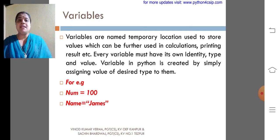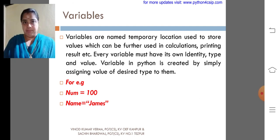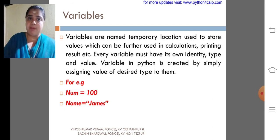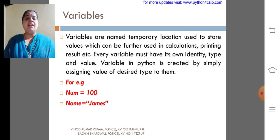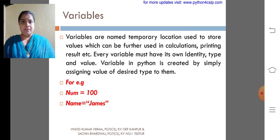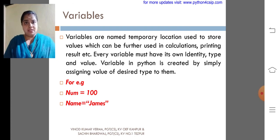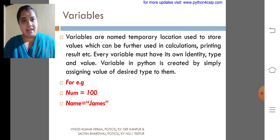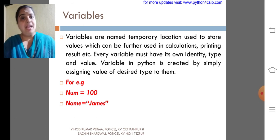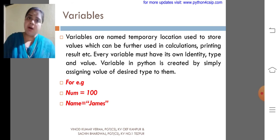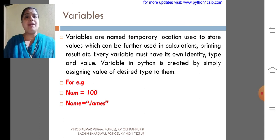Variable in Python is created by simply assigning the value of desired type to them. There is no need to specify the data type of a variable like other programming languages. If you want to make a variable as an integer type, just assign the value with the variable. Look at the example I had given: Num equal to 100. What is the type of num? Nothing but integer. The second example: Name equal to James. What is the type of name? String. The type of the variable depends upon the value which we are assigning to the variable.